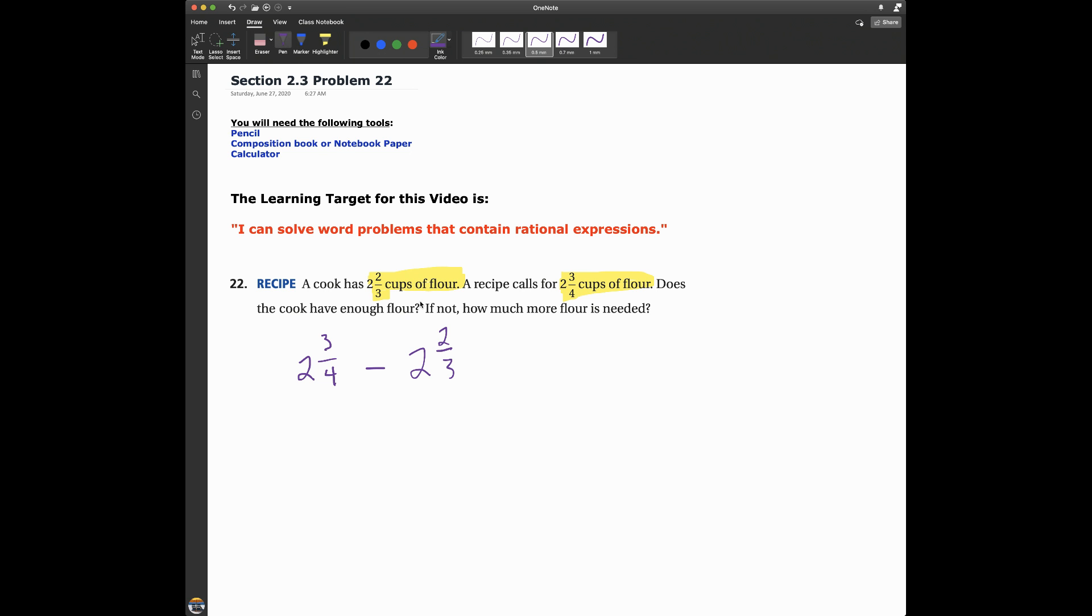What do we need to do? We can turn this into an addition problem by adding the opposite: plus negative two and two-thirds. We can change these to improper fractions. Four times two is eight plus three is 11 over 4, plus negative, three times two is six plus two is eight, eight-thirds.